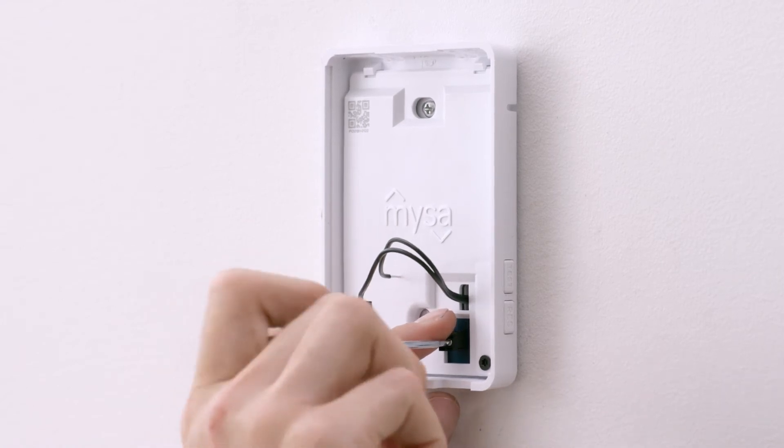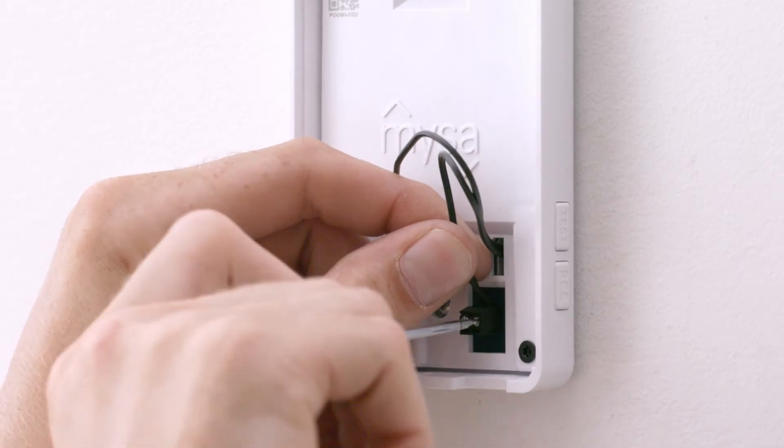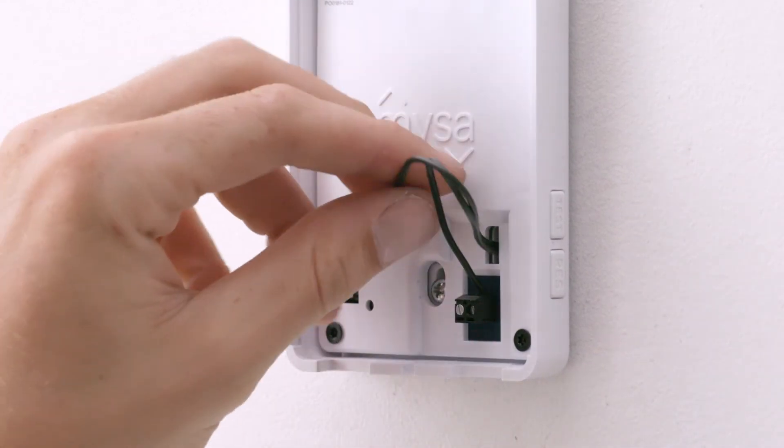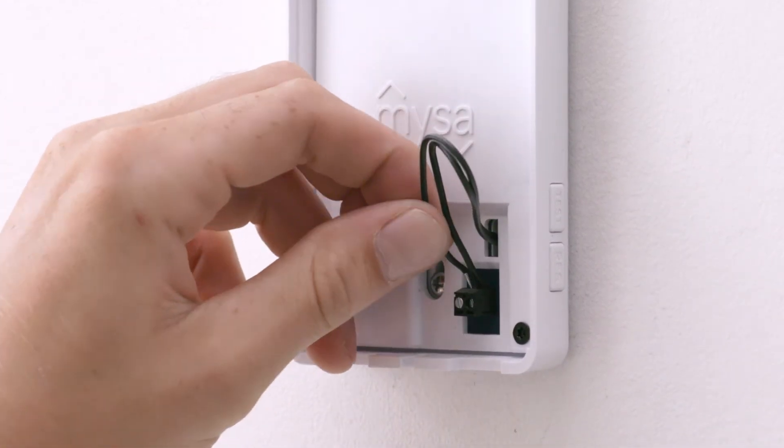Loosen the terminal screws. Then, we'll attach one end of the sensor wire to the terminal and gently tighten the screw on the terminal. We'll repeat the process to connect the second wire from the sensor.